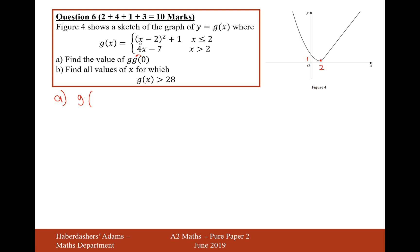Put 0 into the top one of these, I'm going to get 0 minus 2 is minus 2, square that I get 4, plus 1 I get 5. So the first input of 0 gives me 5. And now I'm going to put 5 into the g function, and 5 is greater than 2. So I'm going to put 5 into the bottom one of these functions now. That's 20 minus 7 is 13. So the answer to part a is 13.